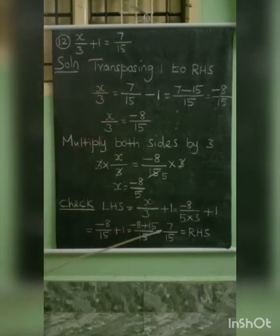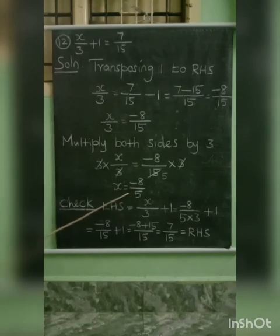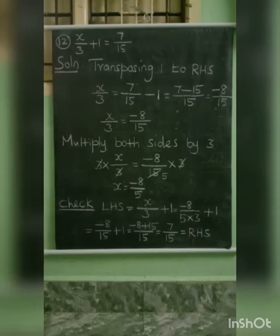This 7 by 15 is the right hand side of the given equation. So, our variable value x equal to minus 8 by 5 is the correct answer.